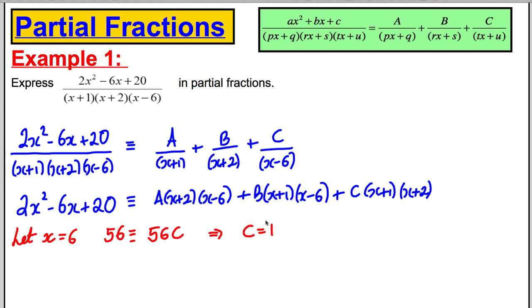Okay, let's let x now be negative 1. This side would be equal to 28. And this side, well this would disappear and this would disappear, so we'd only be left with this. It would be A times 1 times negative 7, which would be negative 7A. Dividing both sides by negative 7, A would be equal to negative 4.